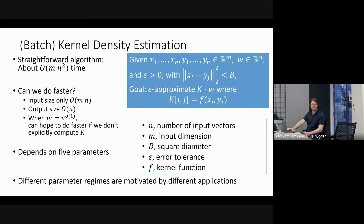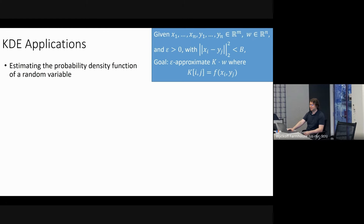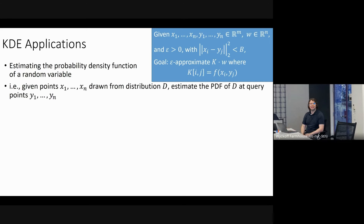Let me tell you about a few different applications and how they motivate different parameter regimes. The first application kernel density estimation was originally defined for is a problem in statistics: estimating the probability density function of a random variable. There's some unknown distribution, you draw a bunch of points from it, and then you want to estimate the PDF at a bunch of query points.